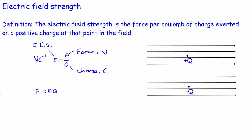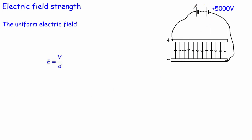Let's look at the uniform electric field first. We have a source of potential difference connected to two conducting plates. When switched on, there's a potential difference across the two plates equal to the source voltage. The top plate becomes positive and the bottom plate becomes negative — one has an excess of electrons, the other a deficit — and an electric field is set up between them, pointing from positive to negative. The electric field strength depends on two things: the size of the potential difference across the plates, and how close together the plates are. Bringing the plates closer together makes the electric field stronger.